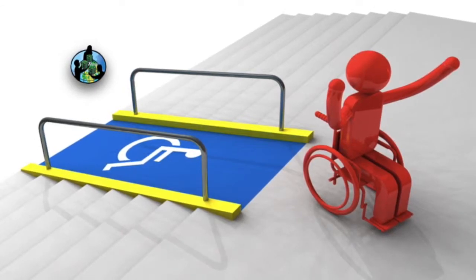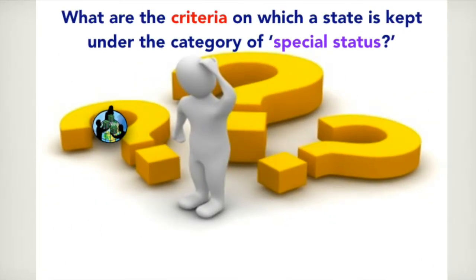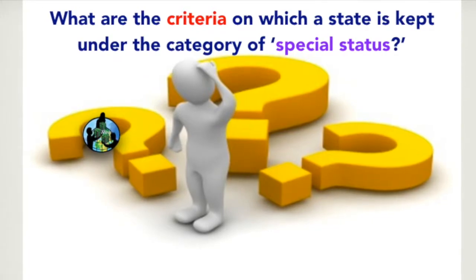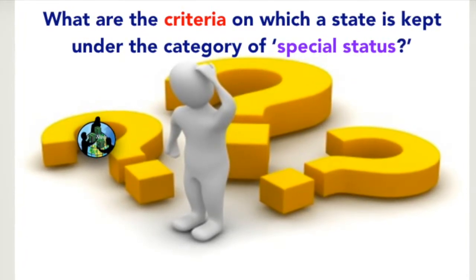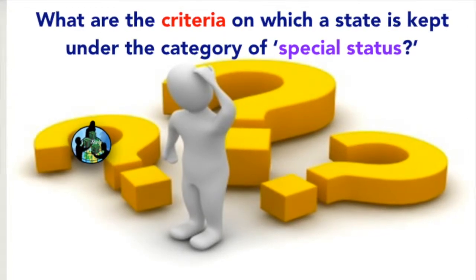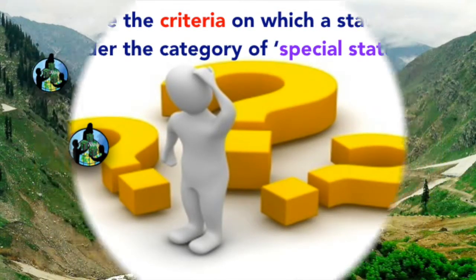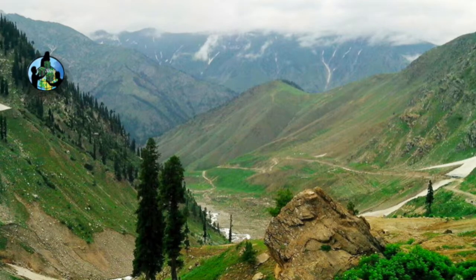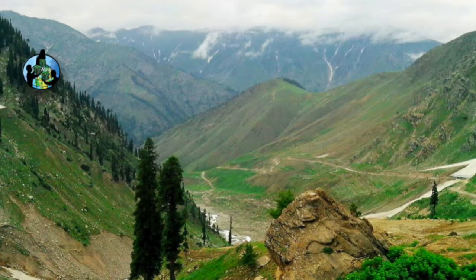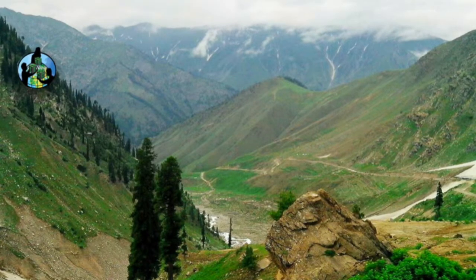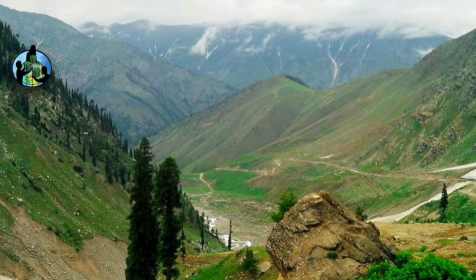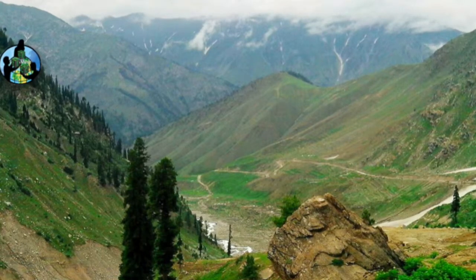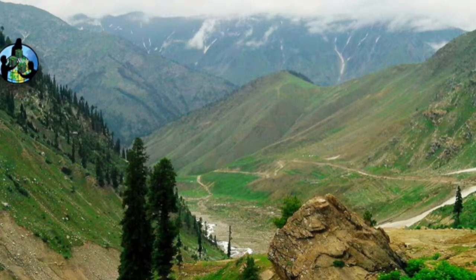Now you might have the question: what are the criteria on which a state is kept under the category of special status? Following are the major criteria that decide the special status of a state. First, geographical area may be hilly and also having undulating terrain, meaning there is very high and low terrain, with no plain land or having least plain land.